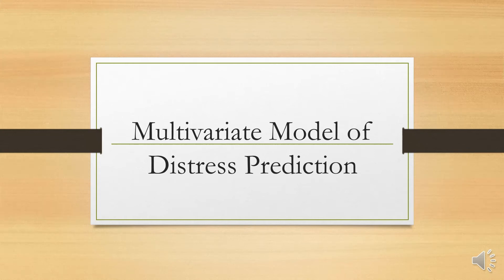Hello learners, we will be discussing the multivariate model of distress prediction in this video. Here we use various accounting ratios to predict the financial health of the company, or we can also say that we can use this model to predict financial crisis in a company.